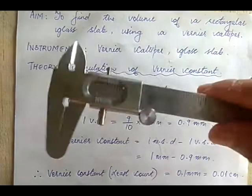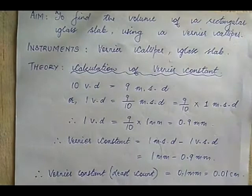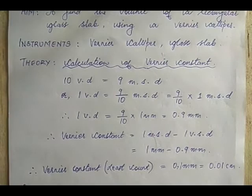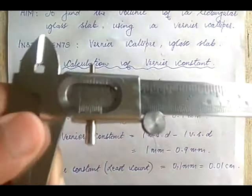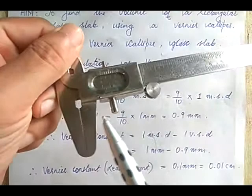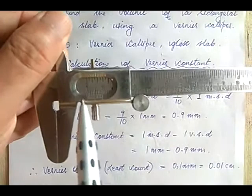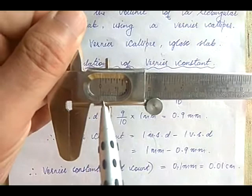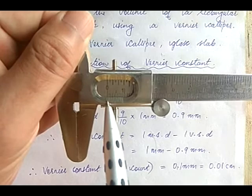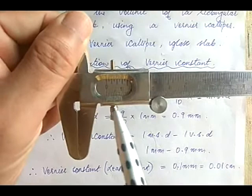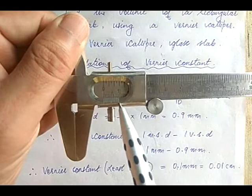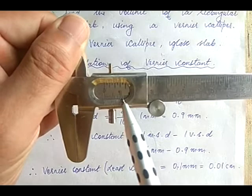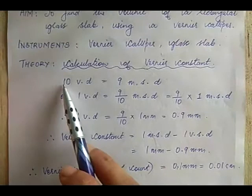The first thing we do is measure the vernier constant. Looking at the instrument carefully when the two jaws are meeting, we see the zero of the vernier scale exactly matches with the zero of the main scale. We also see the tenth division of the vernier exactly matches with the ninth division of the main scale. Therefore, we write: 10 VD (vernier divisions) equals 9 MSD (main scale divisions).